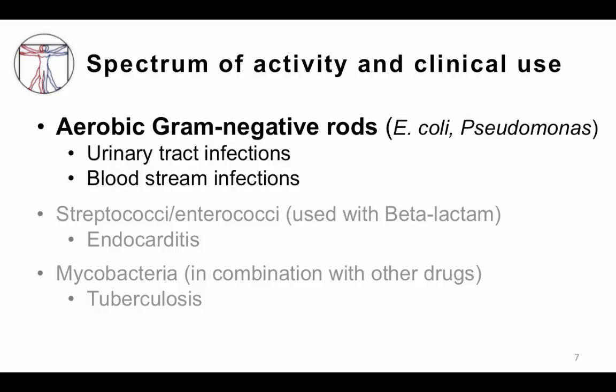Two other areas of use worth noting: in patients with streptococcal or enterococcal endocarditis, the combination of a beta-lactam with an aminoglycoside is used together for synergy, since these drugs are not active against gram-positive bacteria alone. And sometimes in mycobacterial infections like tuberculosis, there's some activity. The key focus, though, is their activity against aerobic gram-negative rods.